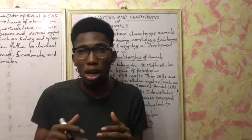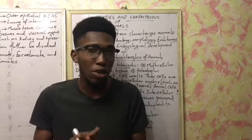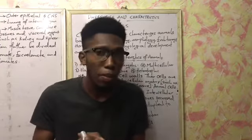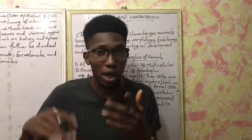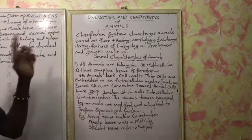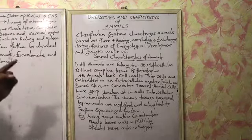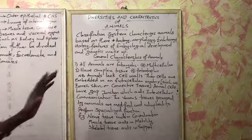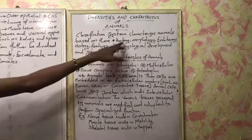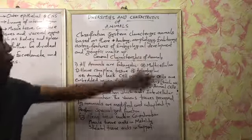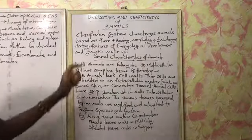We will be expatiating more in our later videos on taxonomy and systematics, as well as classification. Now, the classification system characterizes animals based on their anatomy, morphology, and evolutionary history.